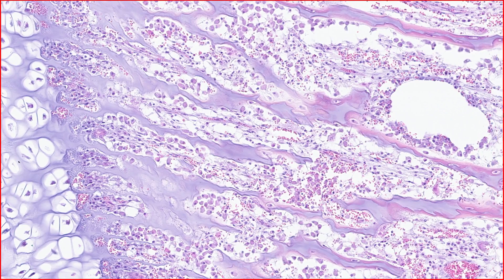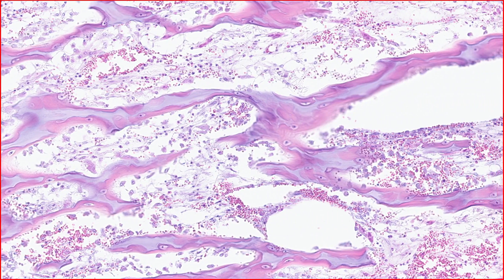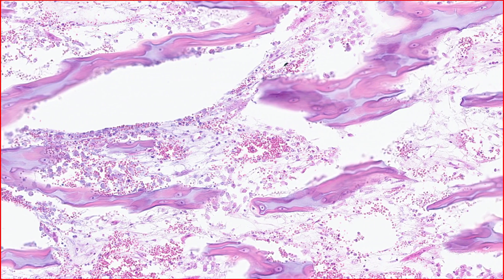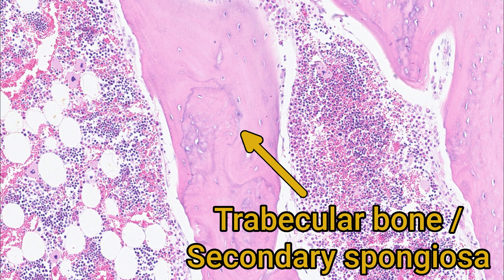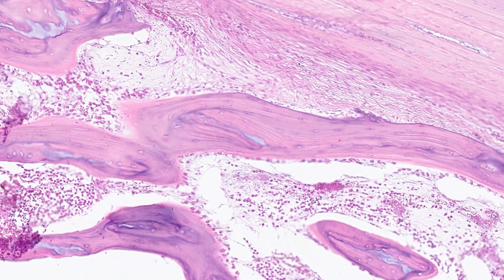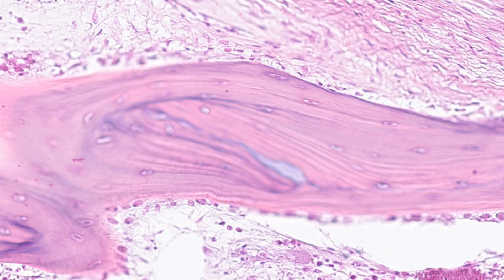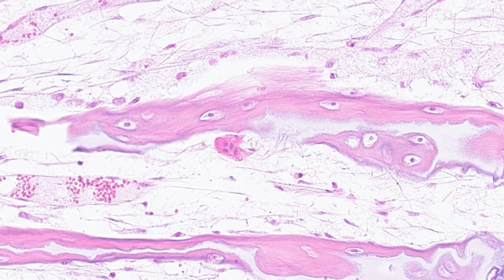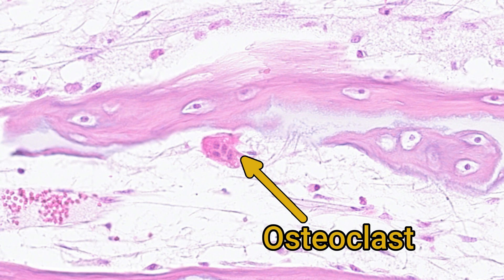Moving further into the diaphysis, we have the final zone: the zone of resorption. Here the primary spongiosa is remodelled through a combination of bone loss by osteoclasts and new bone production by osteoblasts. Ultimately this forms mature trabecular bone called the secondary spongiosa, where woven bone is replaced by lamellar bone — so-called because you can see lines or layers in the bone matrix. The collagen fibres in lamellar bone are organised in parallel layers, whereas those in woven bone are random and disorganised. Osteoclasts are large, multinucleated cells present at the bone margin — a type of histiocytic cell similar to macrophages that specialise in dissolving bone by releasing enzymes and acid.